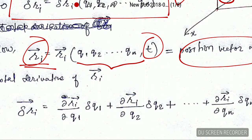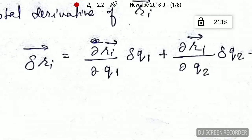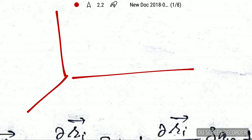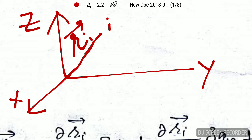First, let me clarify what we mean by displacement. Let me draw an easy diagram. You can see the coordinate system here — this is x, this is y, and this is z. Imagine the ith particle is here, and the position vector of this ith particle is r_i.